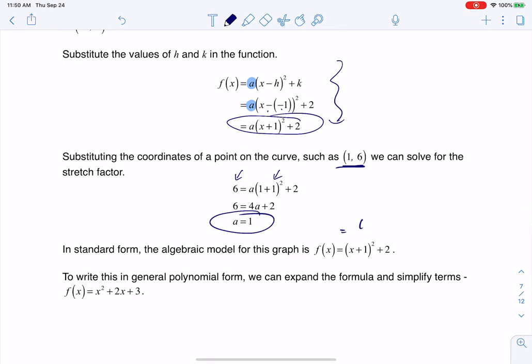So as we go through that, we've got this model. Now if I want to write it in general form, I need to FOIL this out. So this would be (x + 1)(x + 1) + 2. If I FOIL this out, this would be x² + x + x + 1 + 2. Working this up, this is x² + 2x + 3.